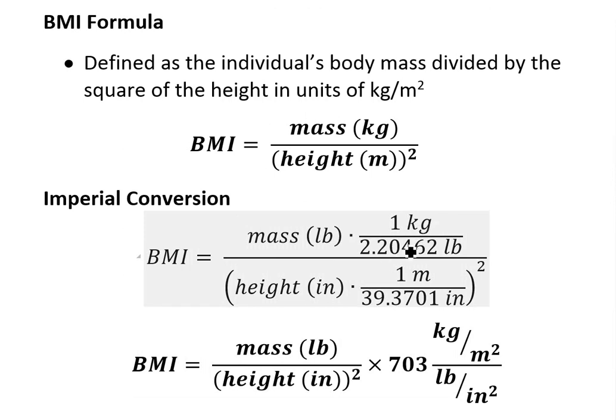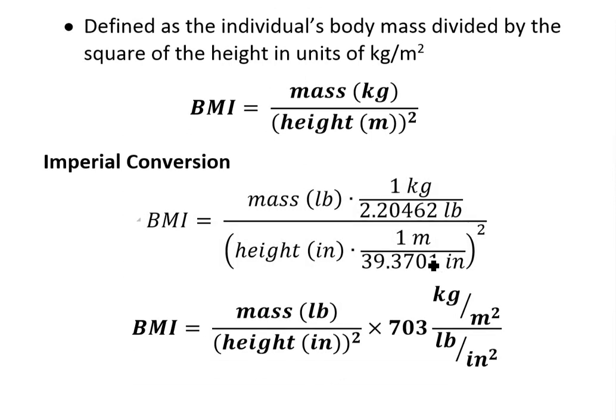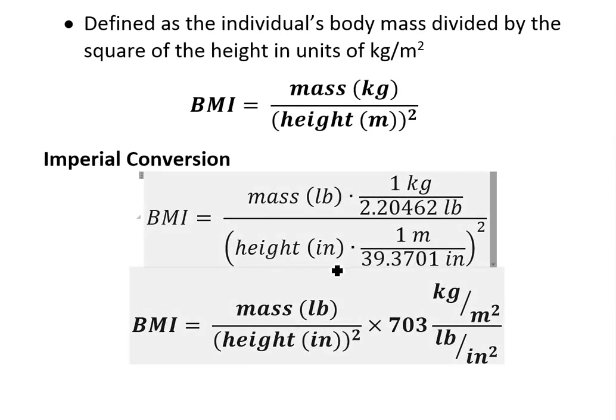One kilogram is equal to 2.204 pounds. And then divide it by height here, but then multiply the height by one meter is equal to 39.37 inches. And then square all that.